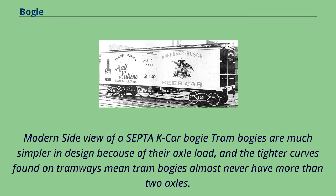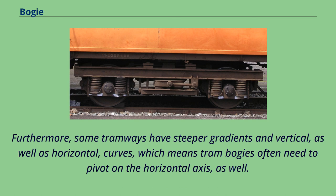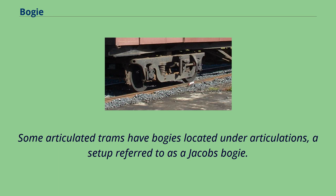Tram bogeys are much simpler in design because of their axle load, and the tighter curves found on tramways mean tram bogeys almost never have more than two axles. Furthermore, some tramways have steeper gradients and vertical as well as horizontal curves, which means tram bogeys often need to pivot on the horizontal axis as well. Some articulated trams have bogeys located under articulations, a setup referred to as a Jacobs bogey.